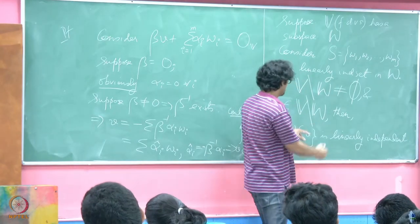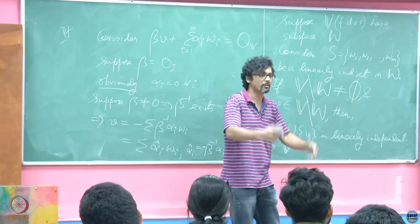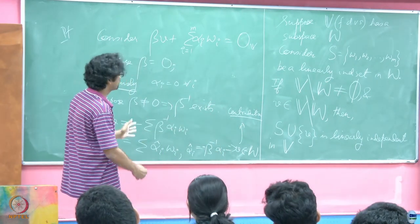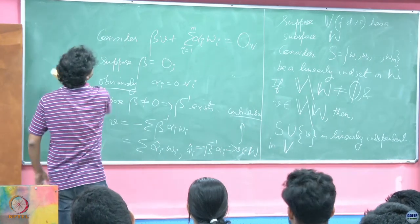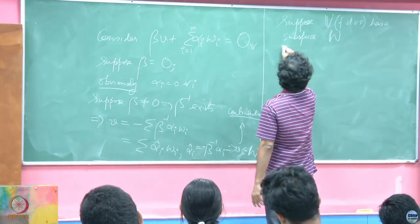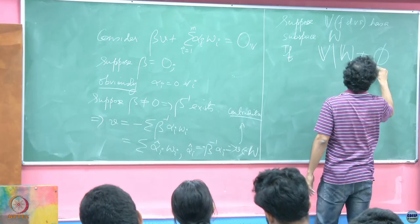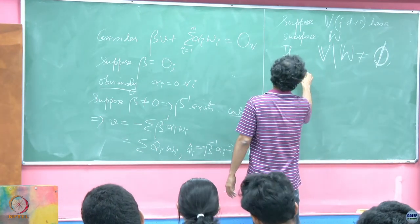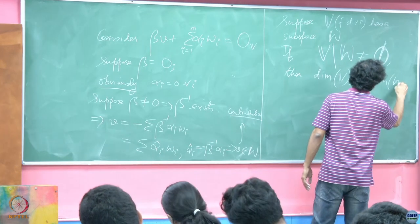This is the constructive way to cook up a basis. Immediately from this result, we get the next important consequence involving dimensions. If V set-minus W is not empty, then the dimension of V must be strictly greater than the dimension of W. Why is this obvious? Consider B_W as a basis for W, and choose v belonging to V set-minus W — such a v is guaranteed to exist since V set-minus W is not empty by assumption.